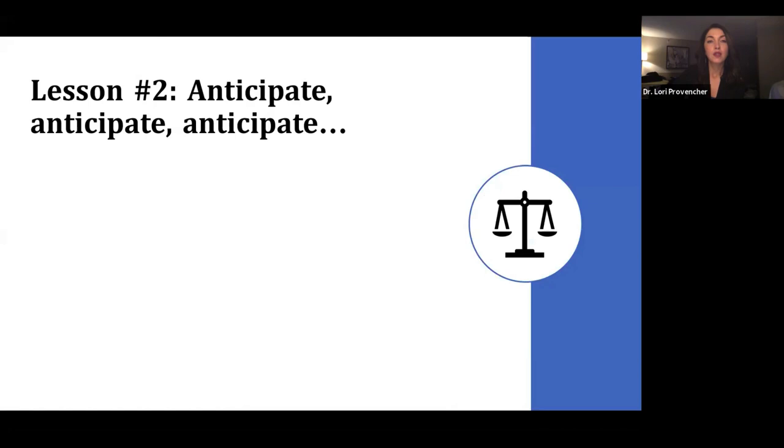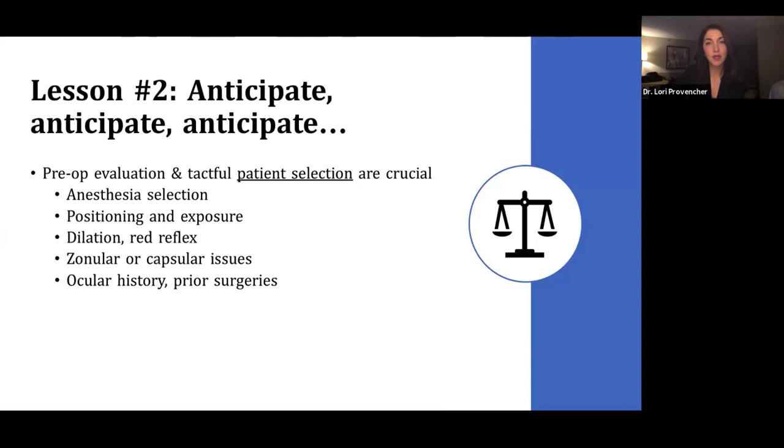Lesson two would be anticipate, anticipate, anticipate. This is something we were really taught well in residency. When you sit down to sign a patient up for surgery, pre-op evaluation and patient selection are so crucial, especially when you're very junior and very early in your FACO training. What I like to envision is as you bring the patient in the room, how the case is going to go from beginning to the end. So what sort of anesthesia are they going to need?